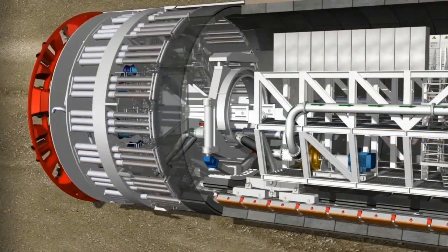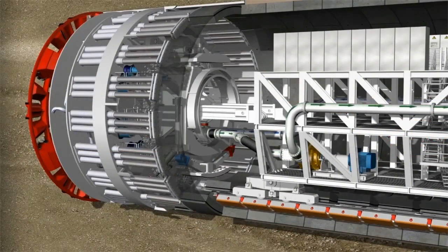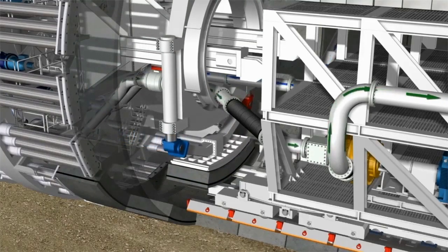The mix shield works in two phases. The first phase is the installation of a lining ring. Concrete segments are supplied by the segment feeder and subsequently lifted by the erector.